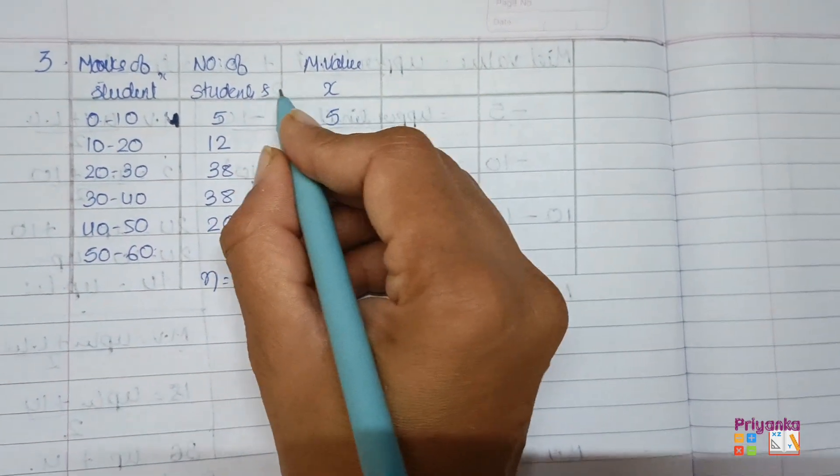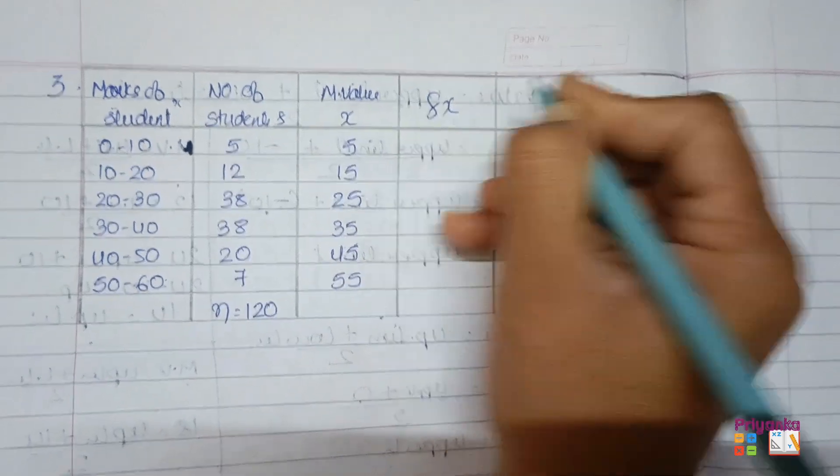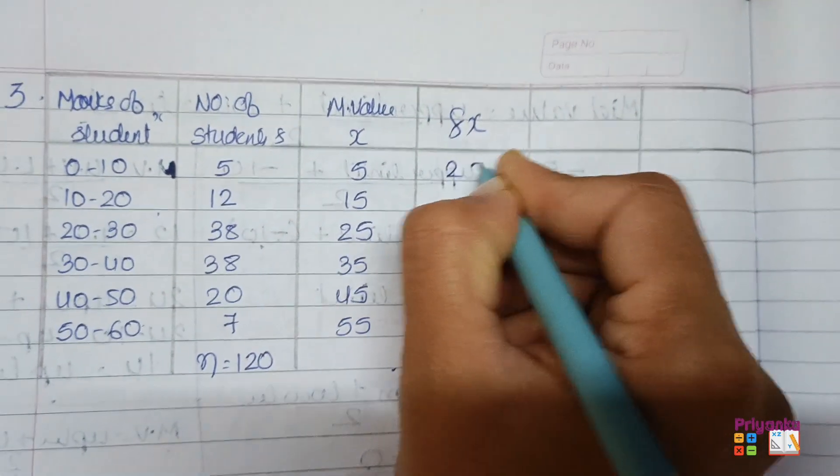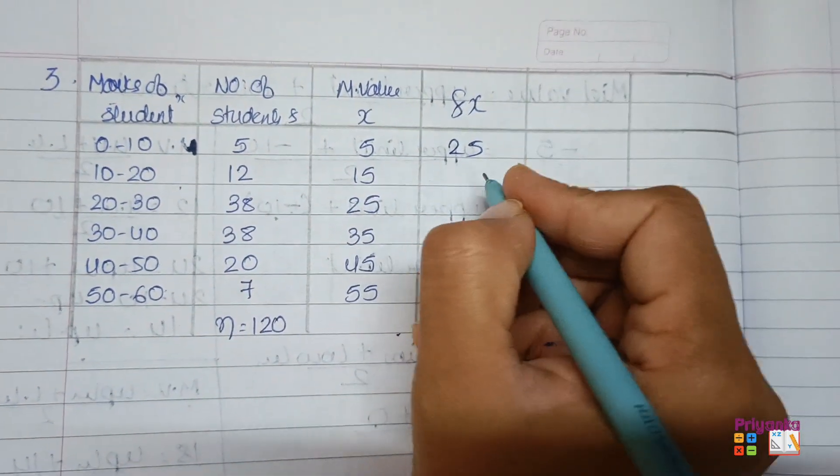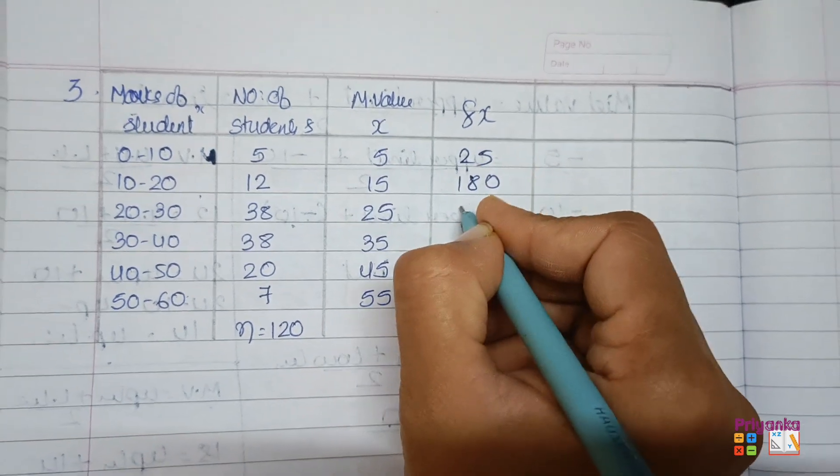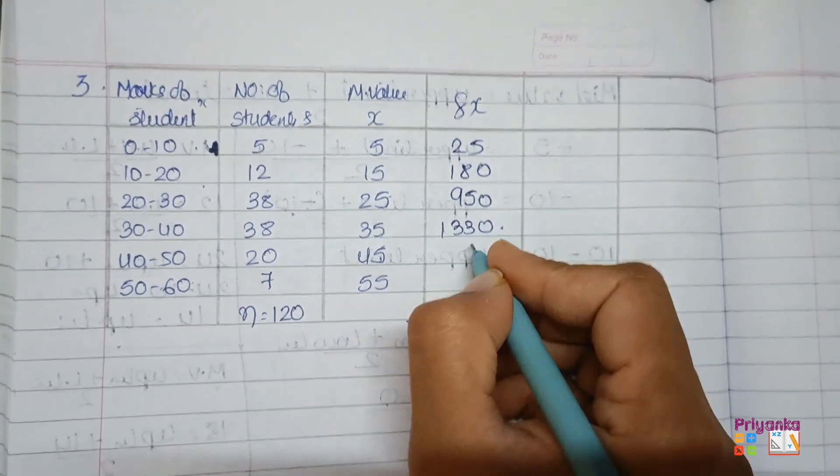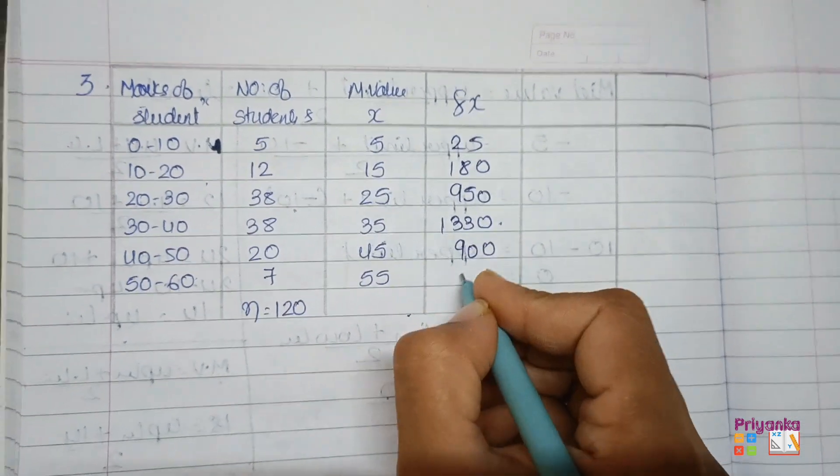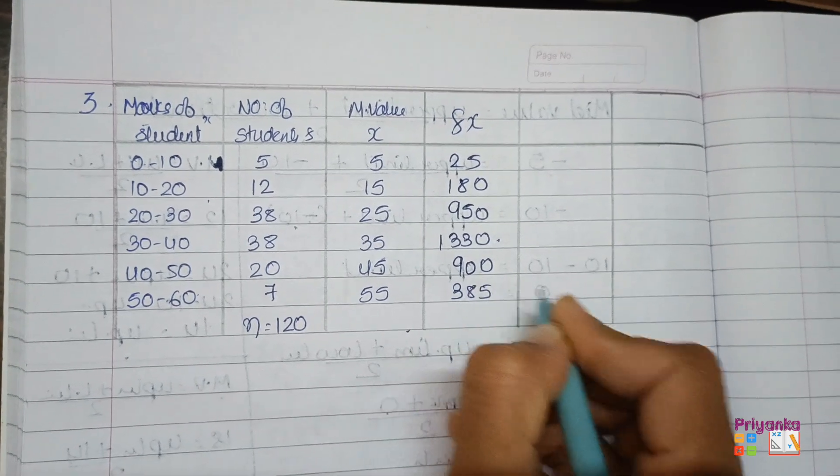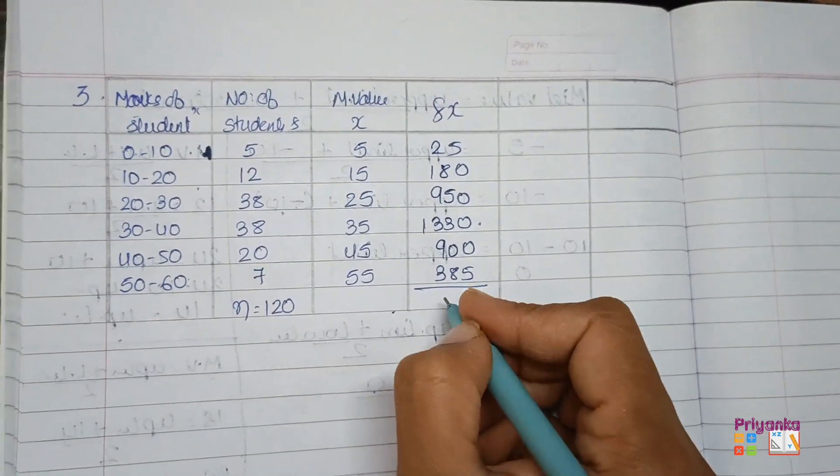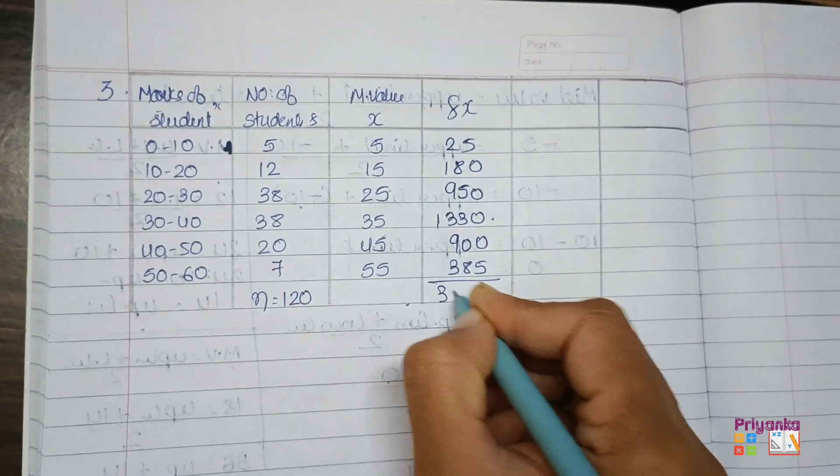Now after getting mid value, we will continue with the multiplication of this to find out fx. That is 5, 7.25, 12 into 15, 180. And like this continue in your calculator. Use your calculator while going through this. Simply don't copy, otherwise you won't get the practice of this. So just take the total here.